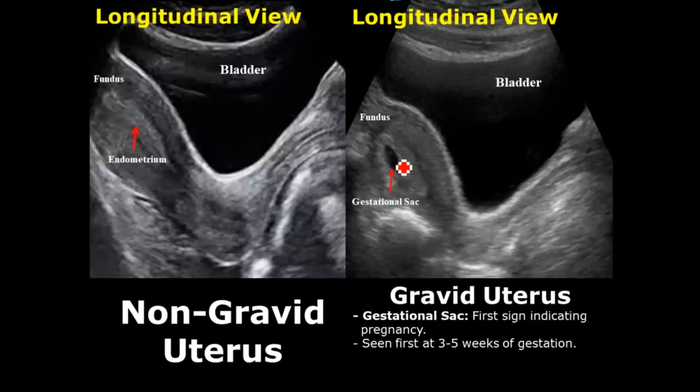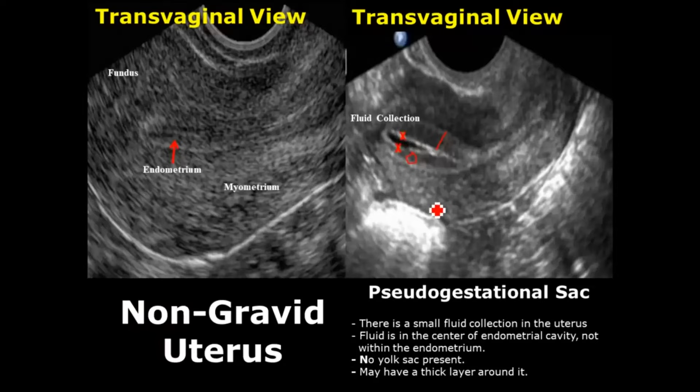On the right side is the gravid uterus with a gestational sac. This gestational sac is usually visualized at 3 to 5 weeks of gestational age. A pseudogestational sac is a fluid collection in the uterus which can mimic a real gestational sac — the main differentiating feature is that it is located centrally in the endometrial cavity rather than being implanted in the endometrium, and sometimes it may be surrounded by a thick decidual layer.